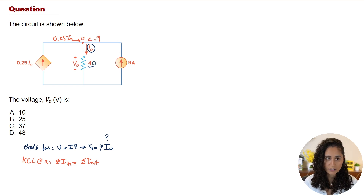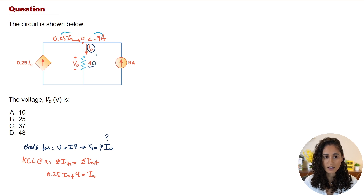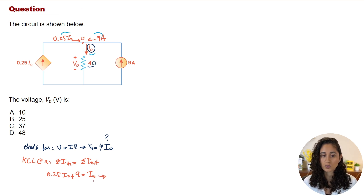So the KCL equation becomes: 0.25·i_naught + 9 = i_naught, since those are the currents entering node A and i_naught is the current leaving node A. Now we just need to rearrange this equation and solve for i_naught, then plug it back into the Ohm's law equation to solve for the voltage.